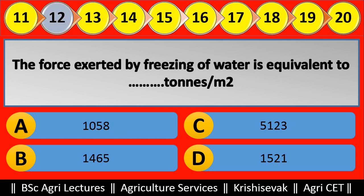Question 12: The force exerted by freezing of water is equivalent to blank tons per meter square. Options are: (a) 10.58, (b) 14.65, (c) 51.23, (d) 15.21. Right answer is 14.65 tons per meter square.